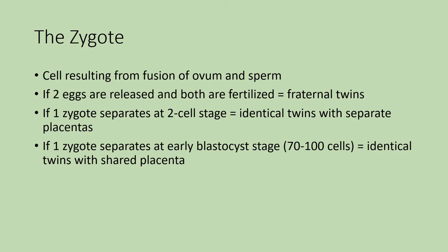Once you have the fusion of the ovum and the sperm, the resulting cell is called a zygote. Because it has chromosomes from both the egg and the sperm, it now has two copies of everything — it's diploid. If two eggs are released during ovulation and both become fertilized, those are known as fraternal twins. They are not identical; they have their own unique DNA. If only one egg is released but the zygote separates at the two-cell stage, you end up with identical twins that have two separate placentas.